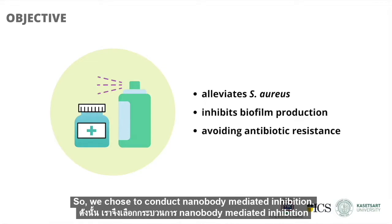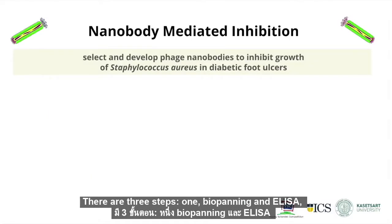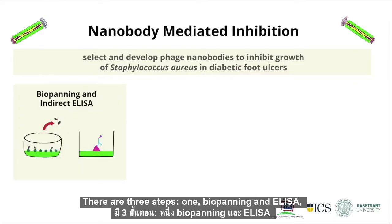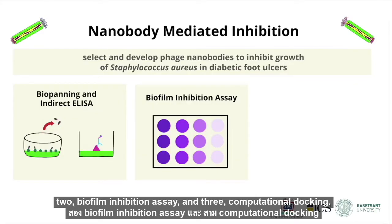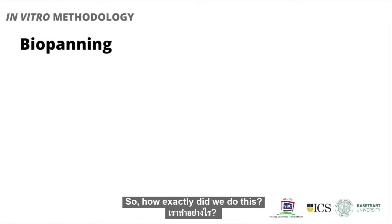So, we chose to conduct nanobody-mediated inhibition. There are three steps: one, biopanning and ELISA; two, biofilm inhibition assay; and three, computational docking. So, how exactly did we do this?